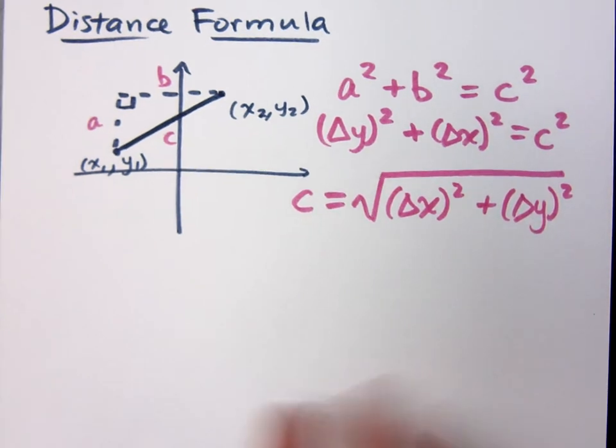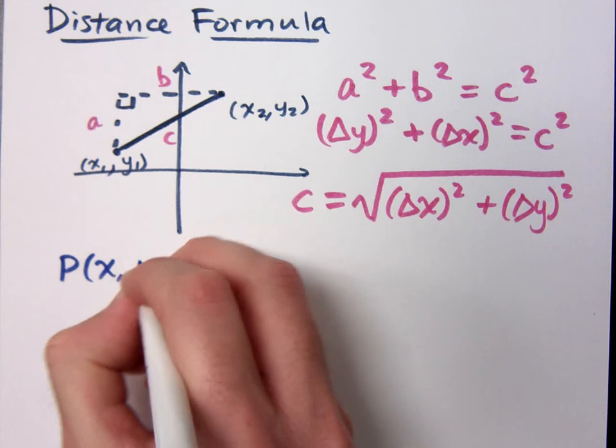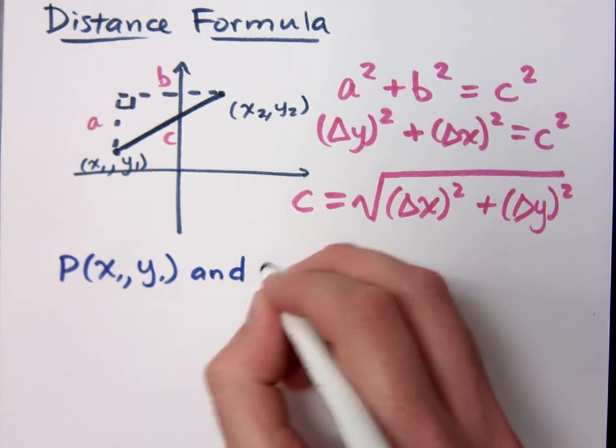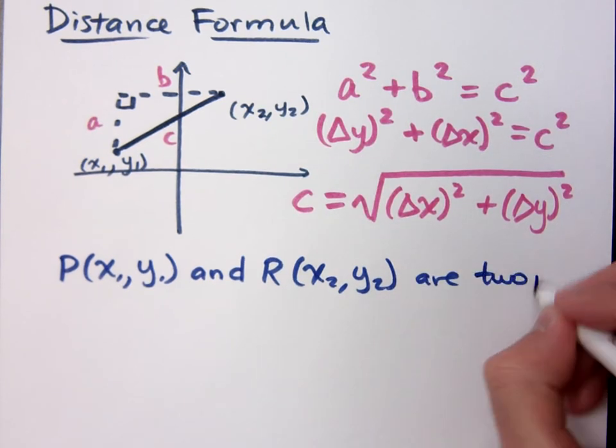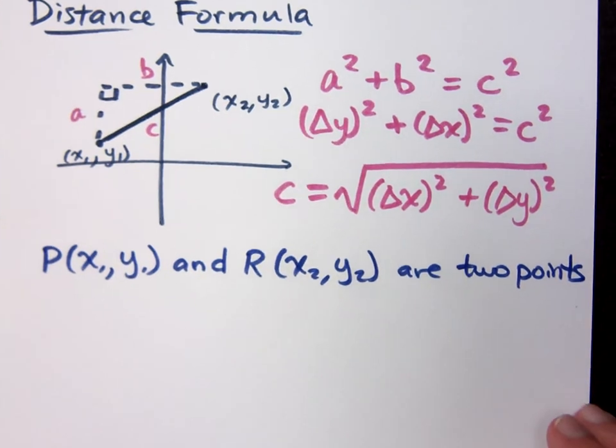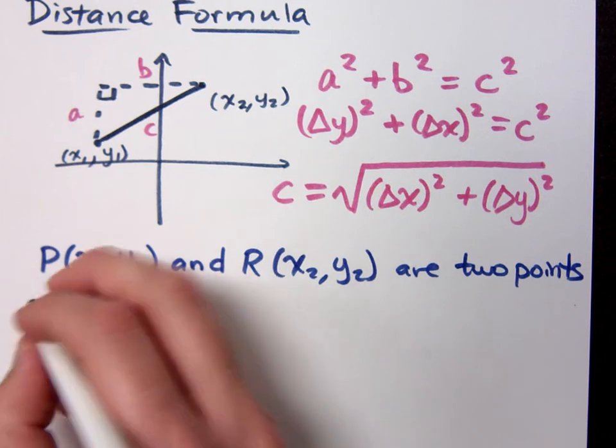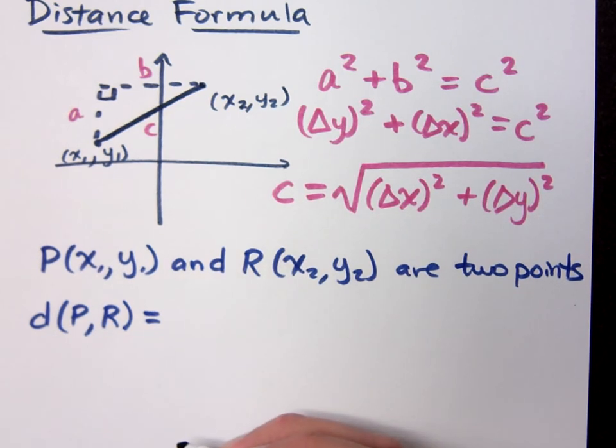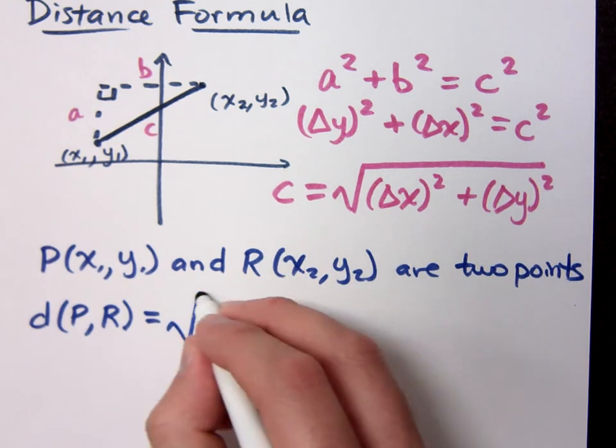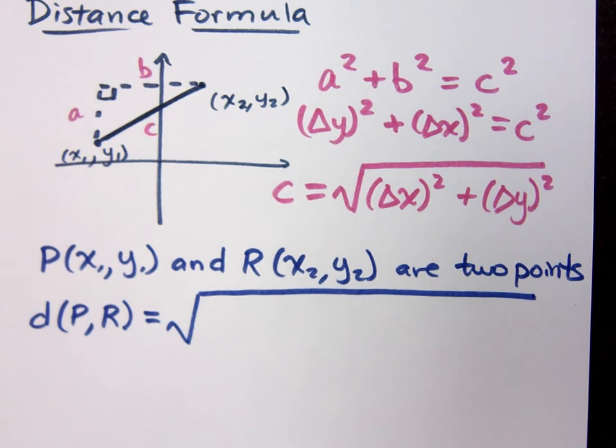Now if you happen to look at a book, they're going to give the distance formula in a slightly different way. They'll say this. P and R are two points. Then the distance, which they use this notation. Now, if you see me doing a lot of things, I'm not going to write them. I'm just going to write D for distance. That's the way I used to always do it. But the way they have the formula is similar to mine, but it's a little more complicated looking. And I don't like it. I want you to see it so you can match up with the book.